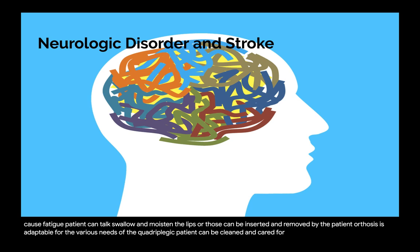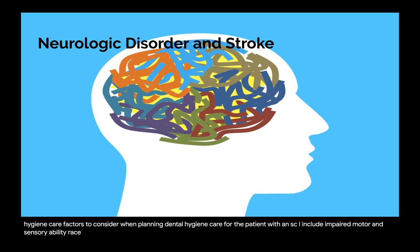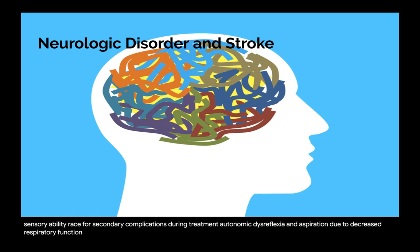Criteria for mouth-held appliances include: does not harm the oral tissues; stabilization of occlusion with contact for all fully erupted teeth and biting forces distributed to as many teeth as possible; not traumatic to the periodontal supporting structures; does not prevent eruption of teeth; comfortable and does not cause fatigue; patient can talk, swallow, and moisten the lips; orthosis can be inserted and removed by the patient; easily cleaned; and relatively inexpensive. Factors to consider when planning dental hygiene care for the patient with SCI include impaired motor and sensory ability, risk for secondary complications, autonomic dysreflexia, aspiration, risk for pressure sores, and potential for spasticity.